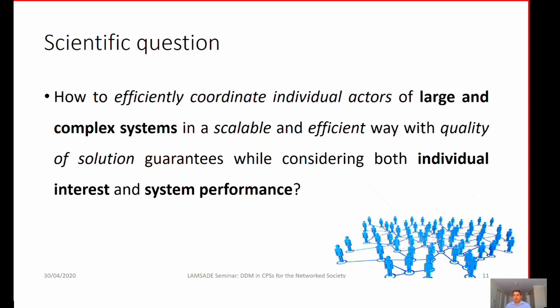Once we detect a computationally very hard problem, we try to prove or demonstrate its efficiency through simulation. In modeling complex large systems, we consider both individual interests — since an agent's participation depends on whether it is in its own interest — and system performance. We do not want just everyone to individually reach Nash equilibrium; we want to balance individual satisfaction with the system optimum. This balancing is the leading theme in my research.